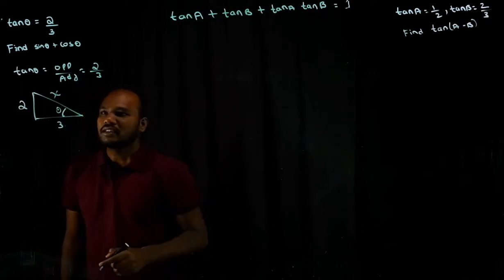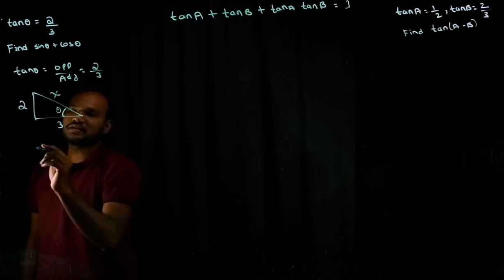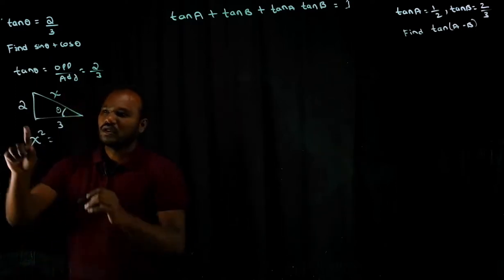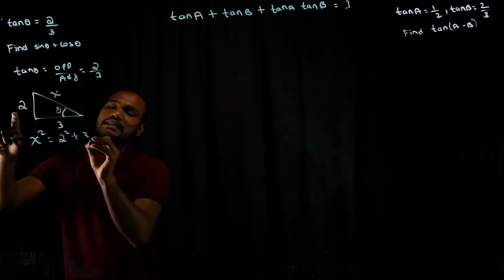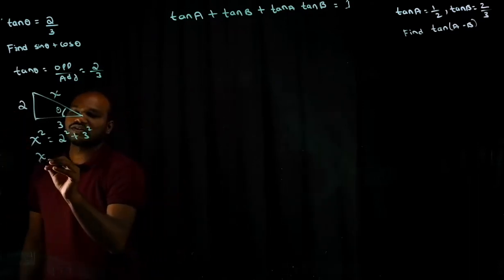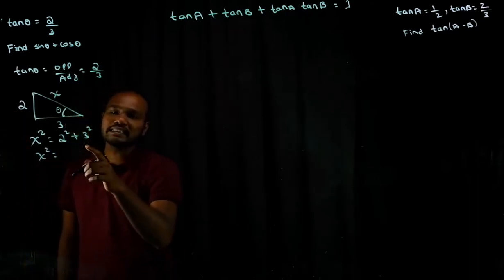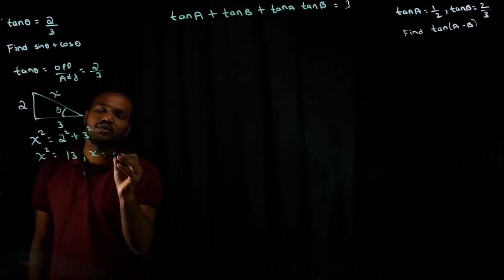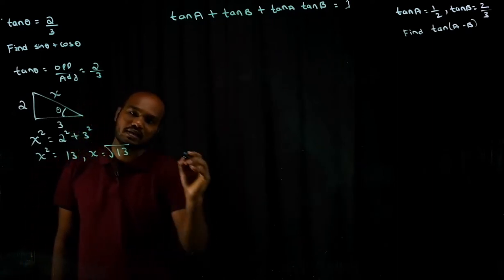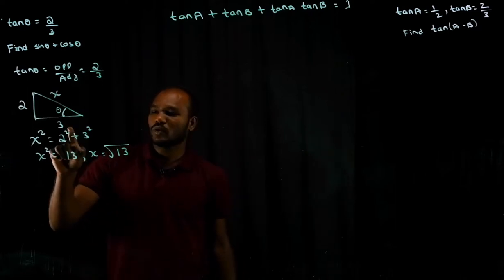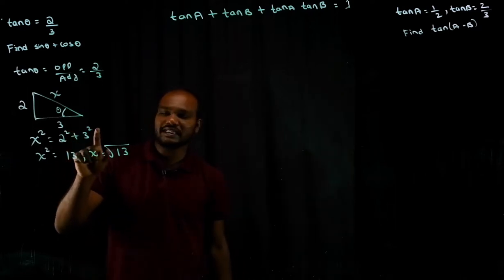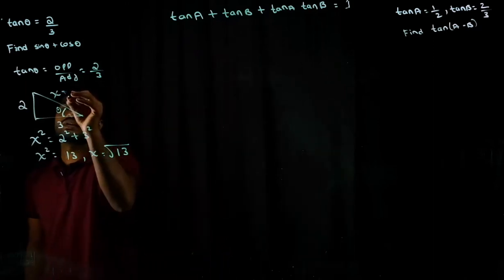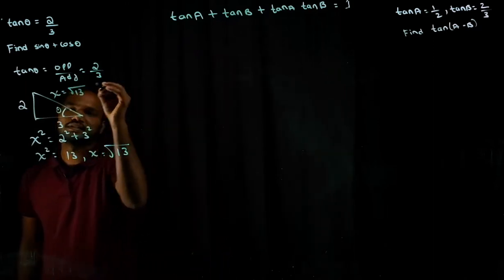How to find X? The Pythagorean theorem says the hypotenuse squared is equal to the sum of the other two sides squared. So X squared equals 4 plus 9, that is 13. So X will be equal to root 13. 2 squared is 4, plus 3 squared is 9, 9 plus 4 is 13. So X is equal to root 13.